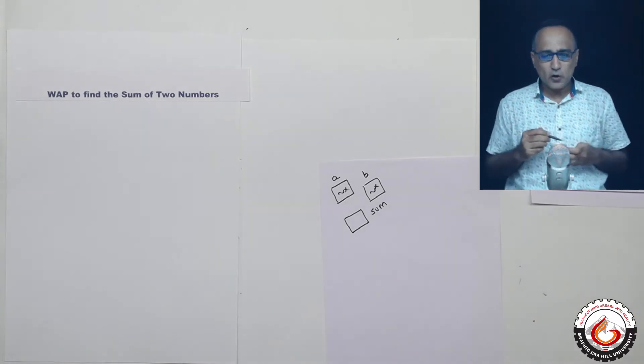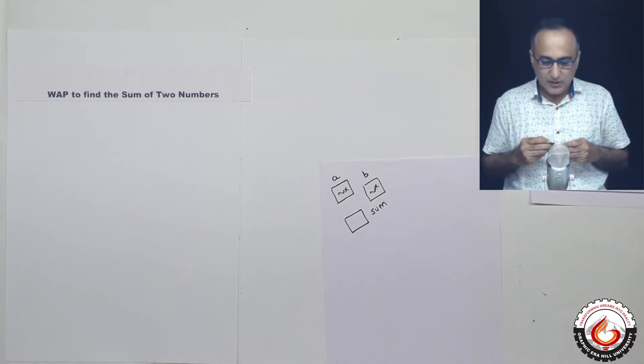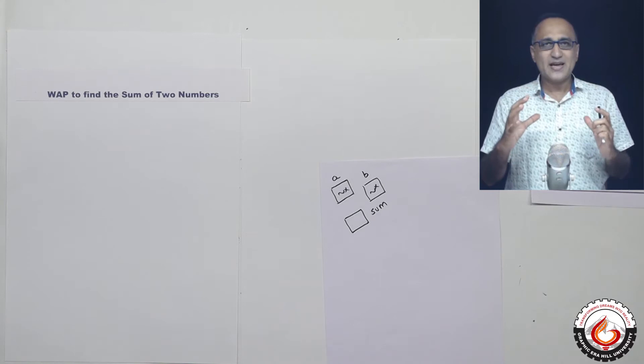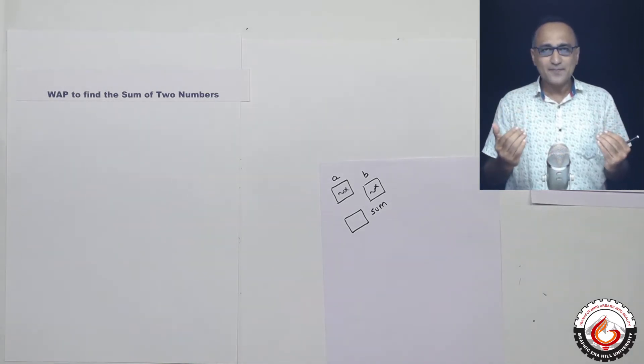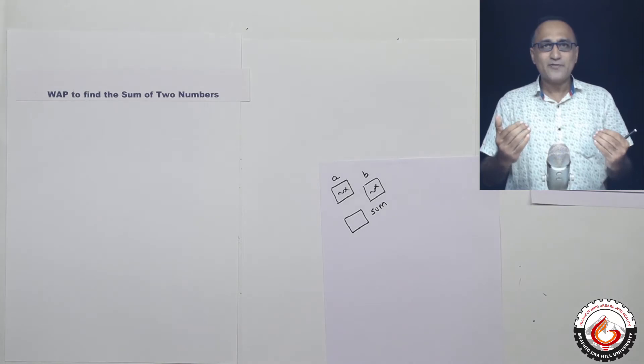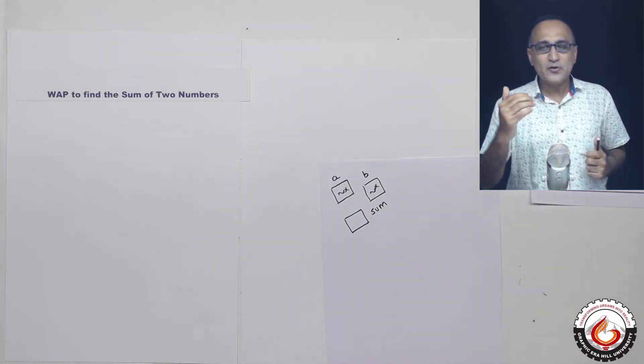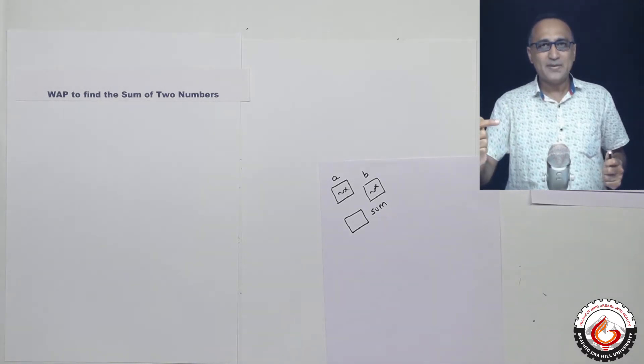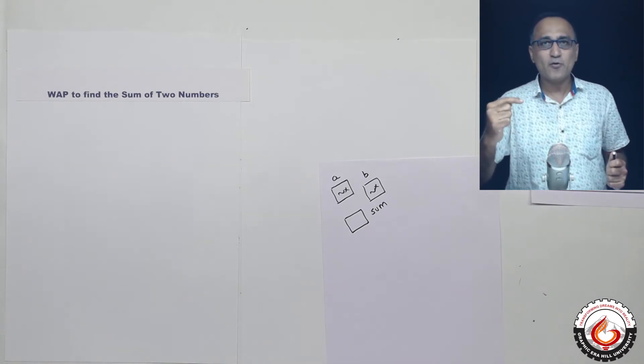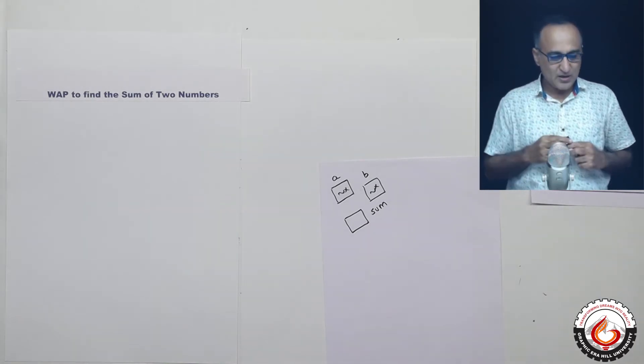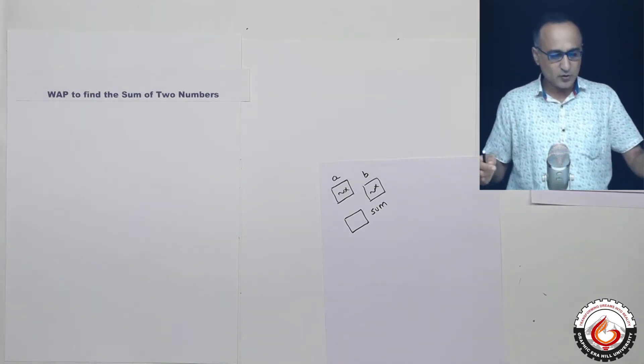So if I had to do a logic to find the sum of two numbers, I would first ask the user to enter the value of a followed by the value of b. Then I am simply going to say add the values of a and b to sum, and in the last step I am going to say display or show the value of sum and then stop. So let's see how the pseudocode looks like.